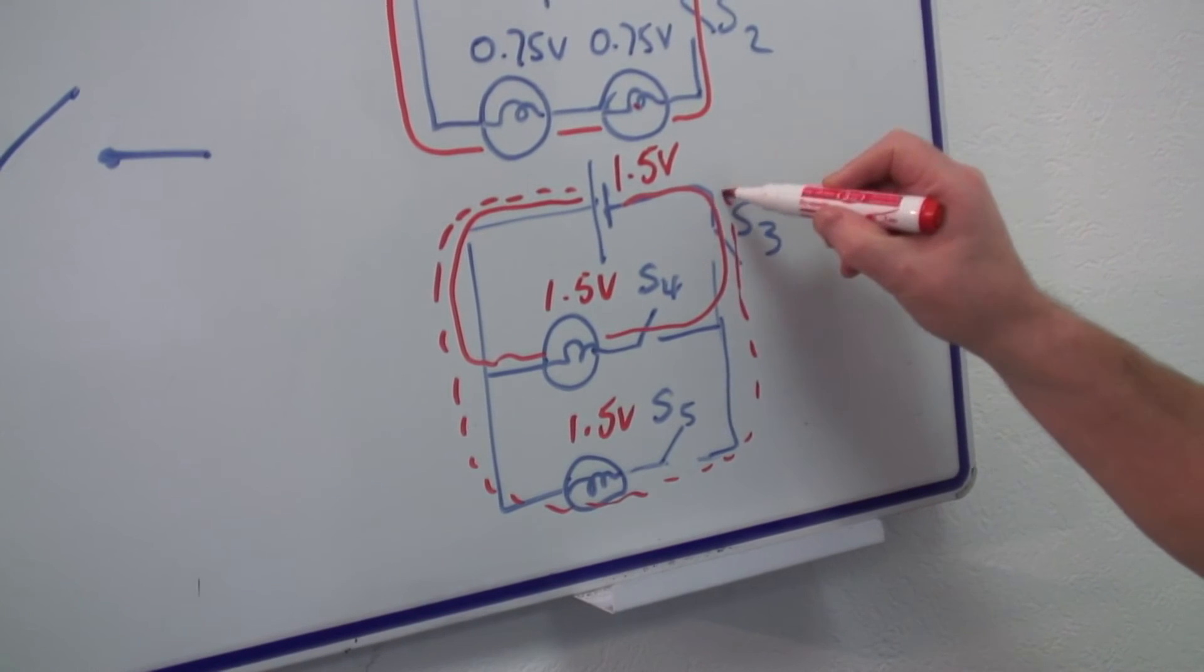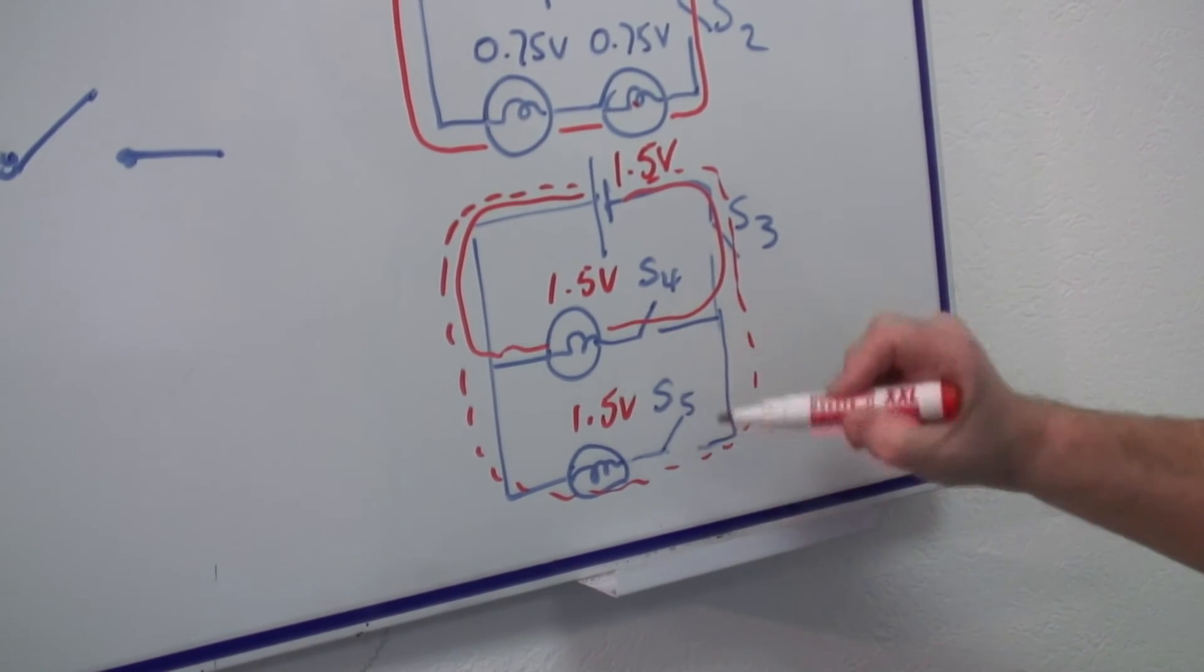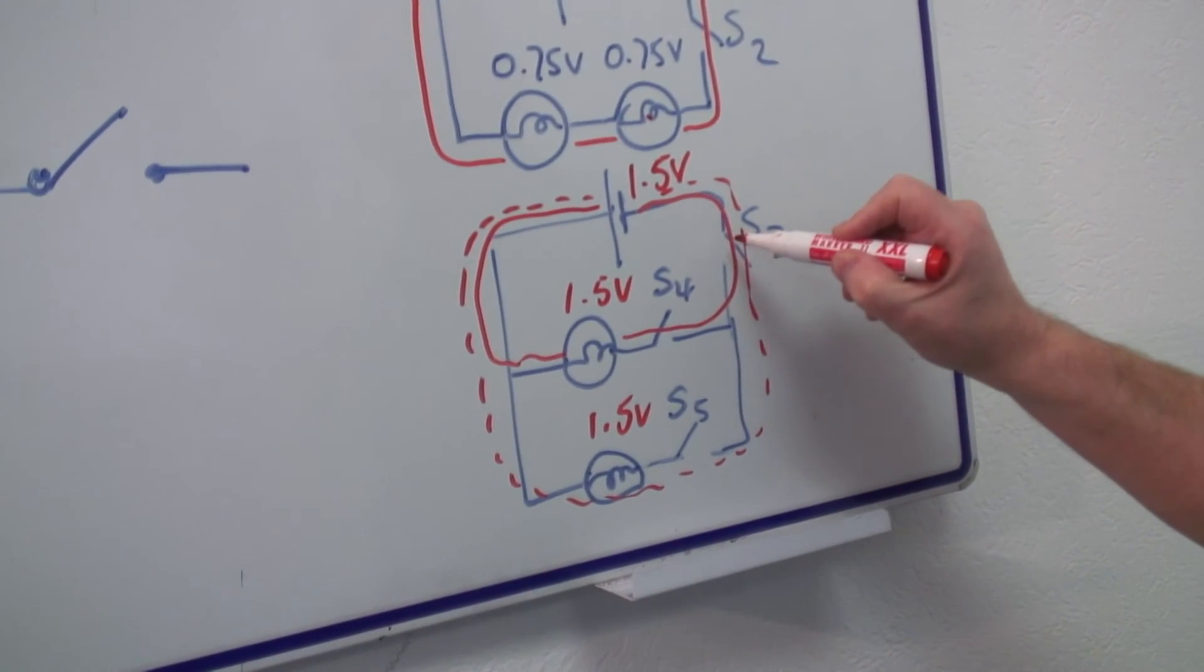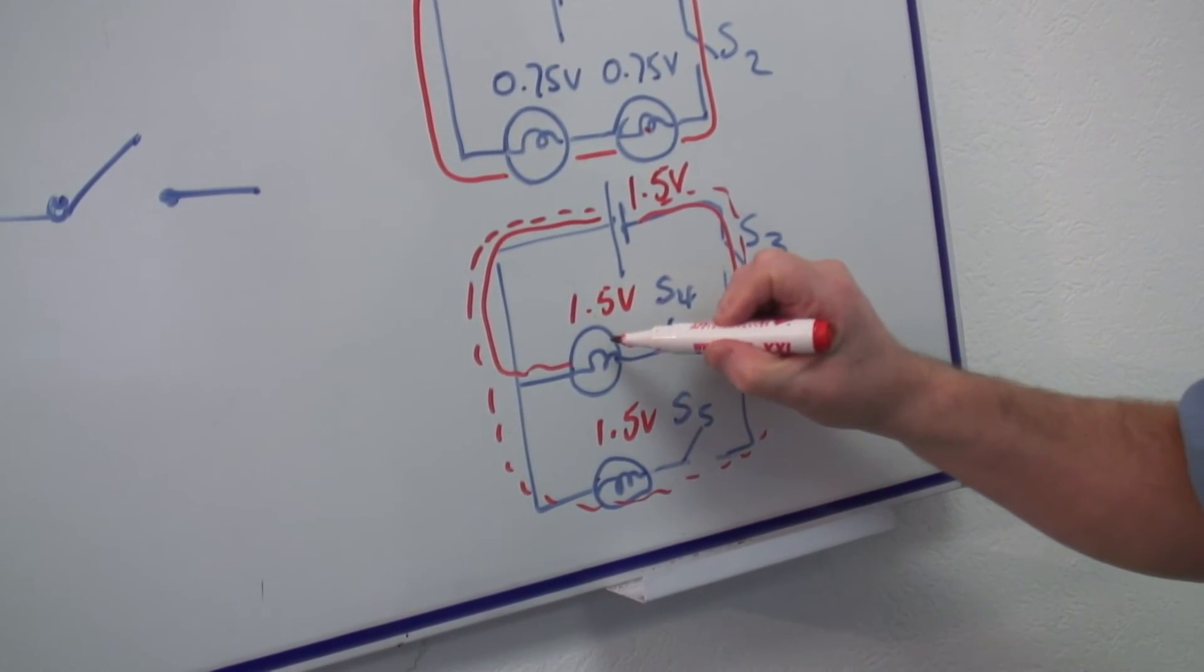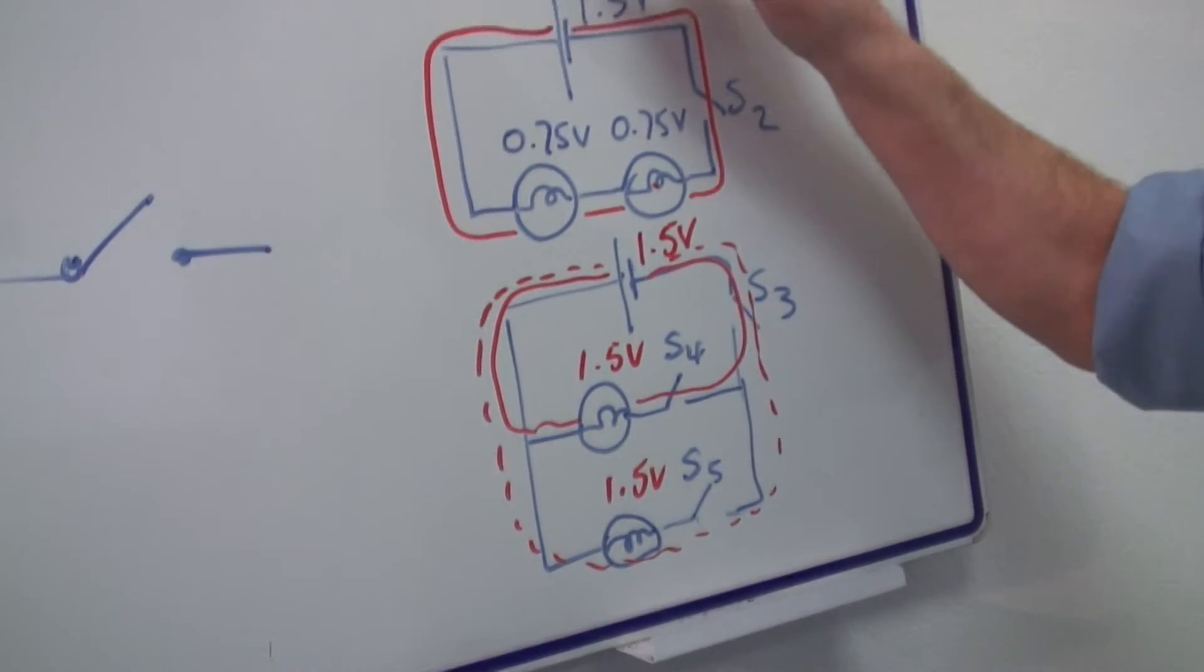And they are separate circuits and can be controlled by separate switches. They each have a voltage of 1.5 volts and will be as bright as this one.